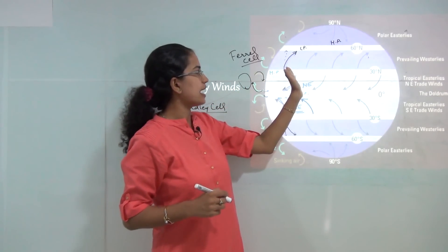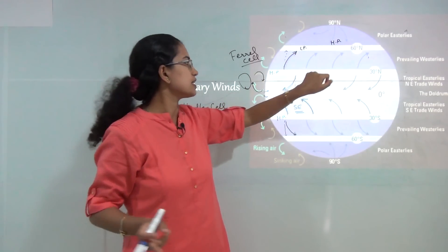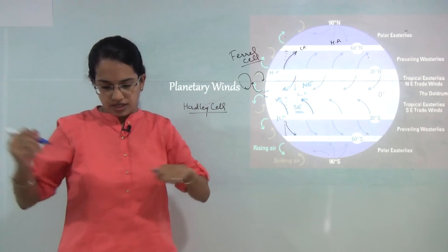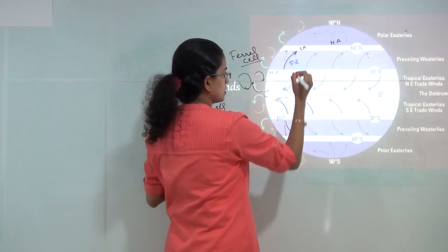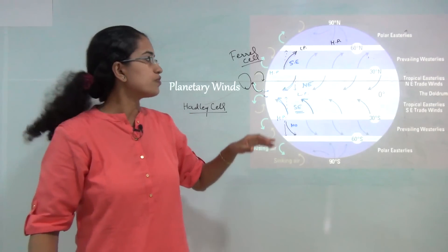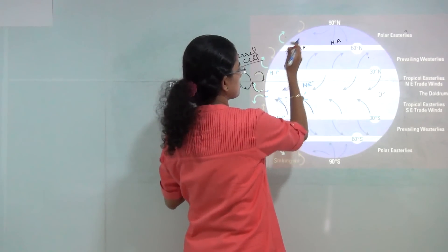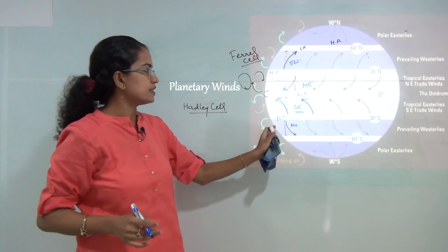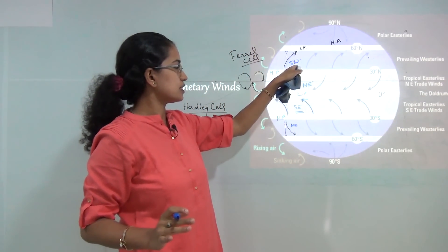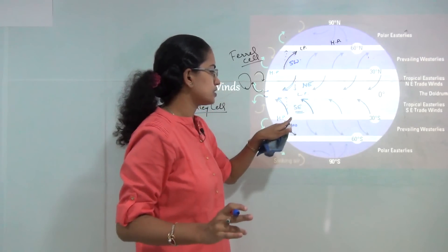Naming these winds based on their origin: in the southern hemisphere, westerlies originate from the west moving towards the east from the south, so they are called southwesterlies. In the northern hemisphere they are also called southwesterlies, while in the southern hemisphere they are called northwesterlies. Since they come from the west, they are collectively referred to as westerlies.